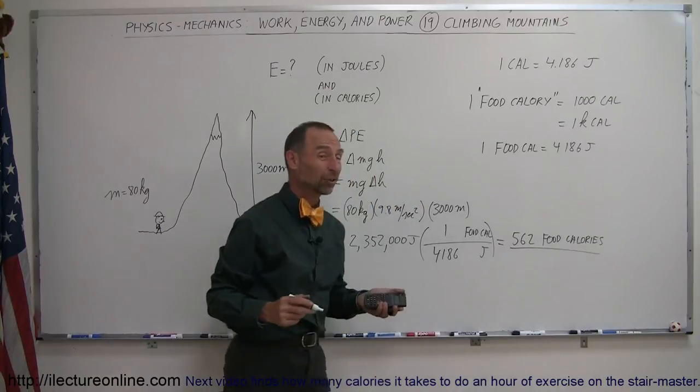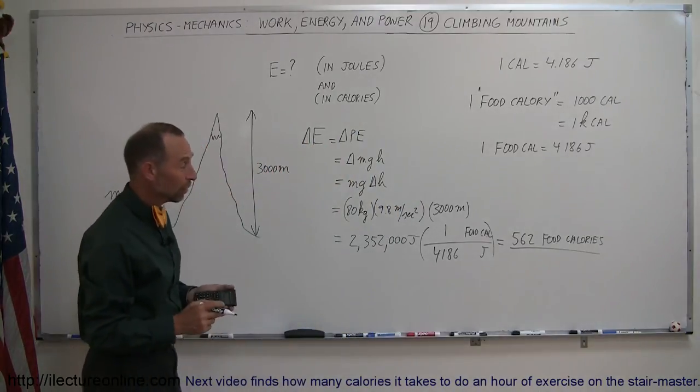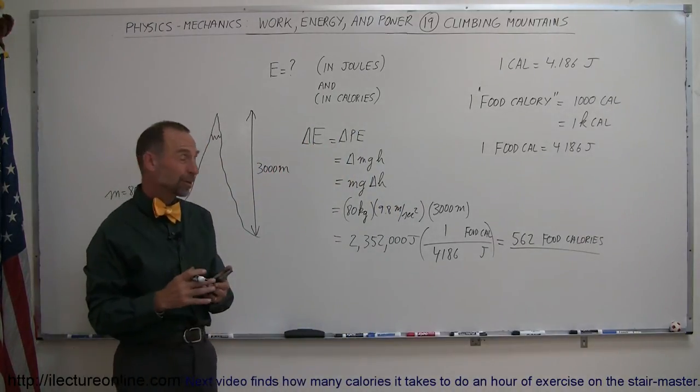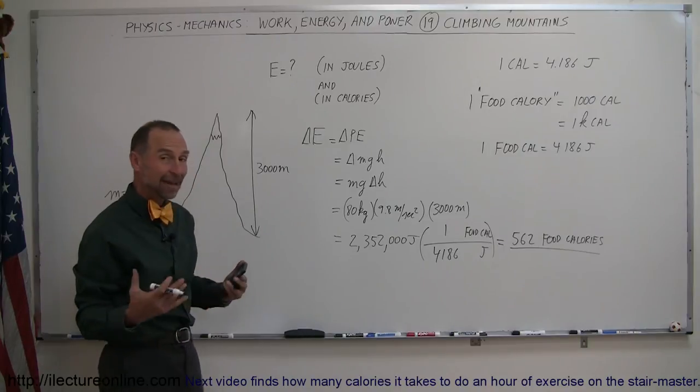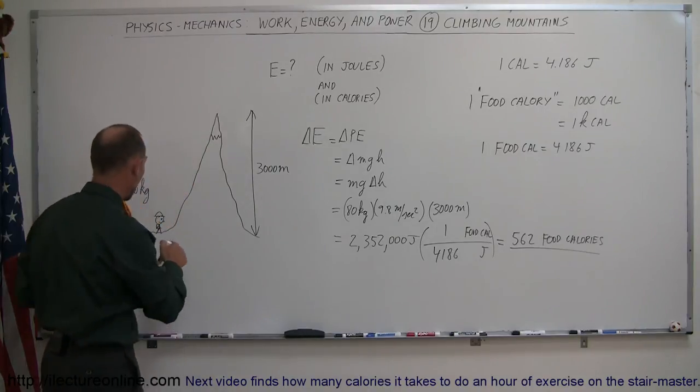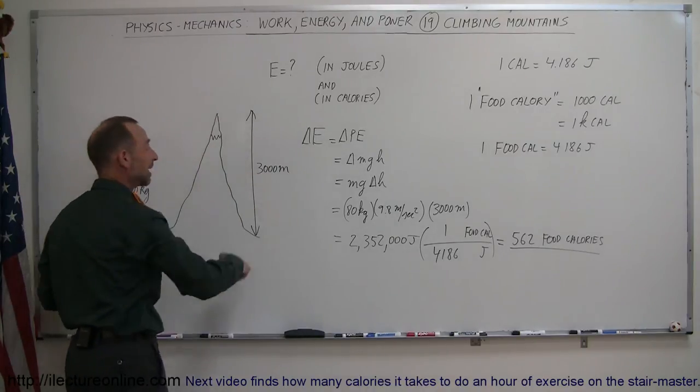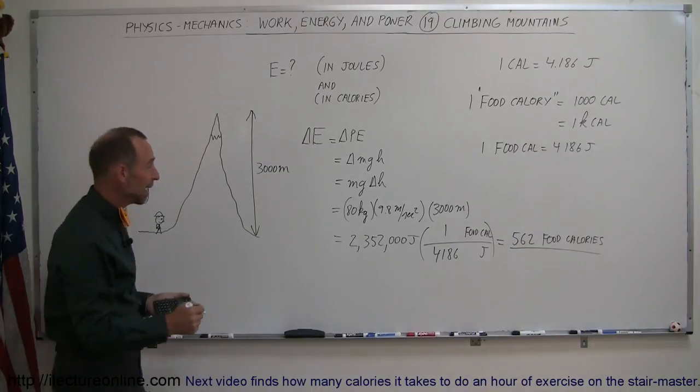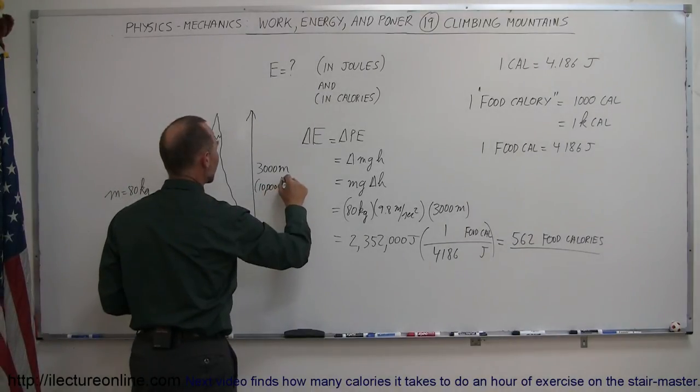Wow. So in actuality, we could go to McDonald's, order one hamburger like a Big Mac, eat it, and have enough energy in our bodies to hike all the way to the top of a 3,000 meter or 10,000 foot mountain. That's pretty good. Our bodies are pretty efficient.